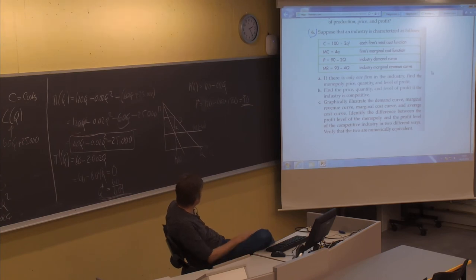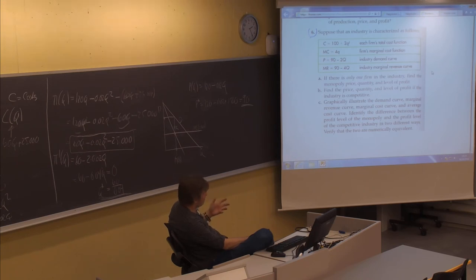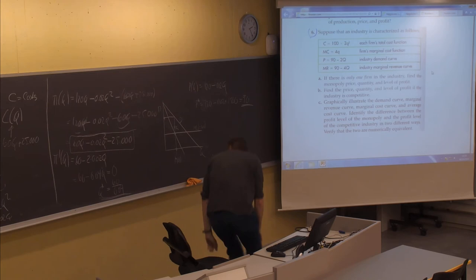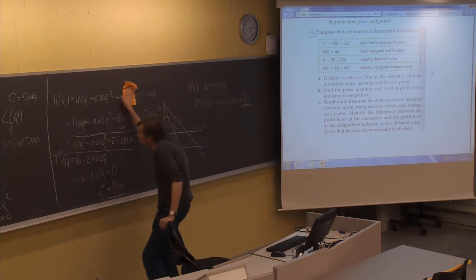In question A it says: if there is only one firm in the industry, find the monopoly price, quantity, and level of profit. This is the same kind of thing we did in the previous exercise, so as long as we use the marginal cost and marginal revenue curves given here, we don't need to spend too much time on this.